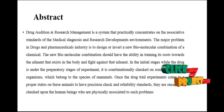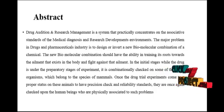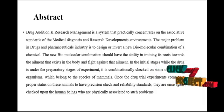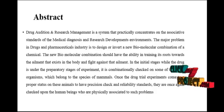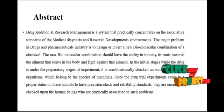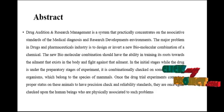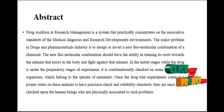The new biomolecular combination should have the ability to target its roots towards the ailment that exists in the body and to fight against that ailment. In the initial stages, while the drug is under the preparatory stages of experiment, it is combinatorially checked on some living organisms belonging to the species of mammals. Once the drug trial experiments reach proper precision, check, and reliability standards, they are once again checked upon human beings who are physically associated with such problems.